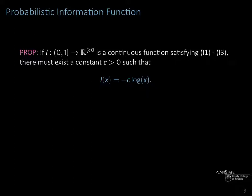We can prove the following proposition: If I: (0,1] → ℝ>0 is a continuous function satisfying the three axioms (I1, I2, I3)—continuity is a reasonable assumption because why would information jump at some point?—then there must exist a constant c > 0 such that I(x) = -c log(x). Essentially, it is the negative logarithm scaled by a constant.